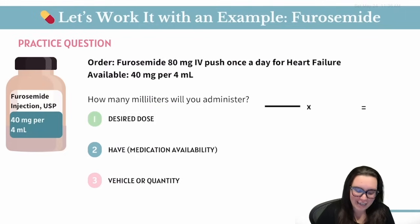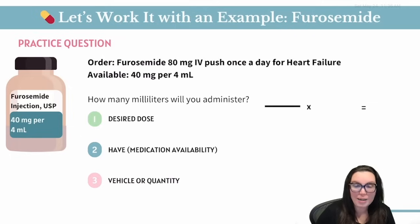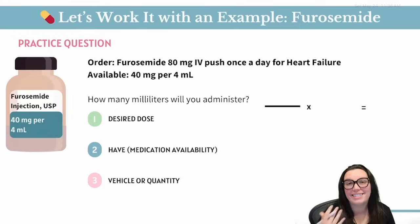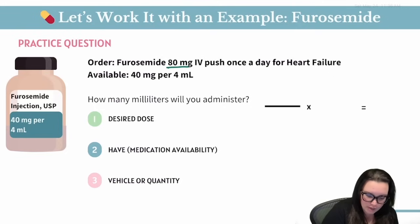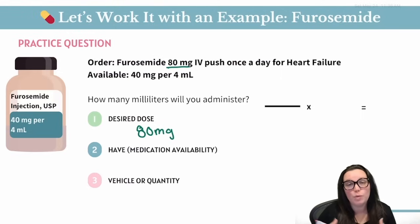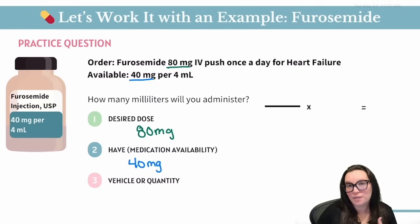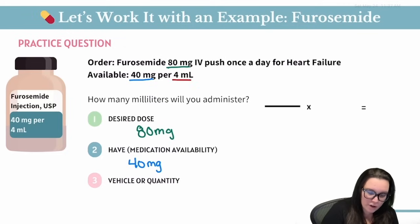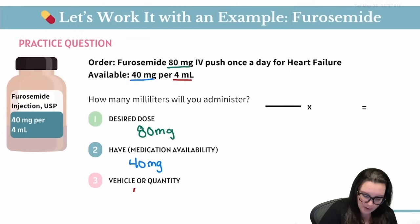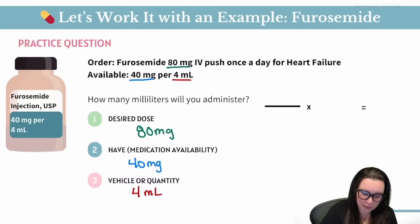Let's take a look at our next practice question. We have an order for furosemide 80 milligrams IV push once a day for heart failure, and we know that the medication is available in 40 milligrams per 4 mLs. So let's figure out how much we're going to give. What is the desired dose? We know that the ordered dose is 80 milligrams. Next up, what do we have available? The medication is available in 40 milligrams, and what's our vehicle or quantity? We know that 40 milligrams is available in every 4 mLs.